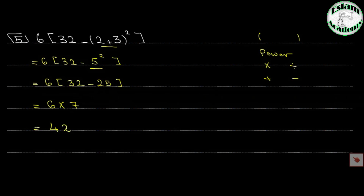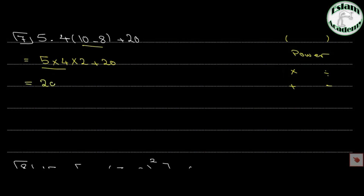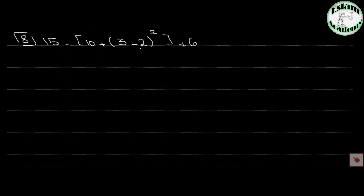Number 6: 5 times 4 times (10 minus 8) plus 2. We solve the bracket first: 10 minus 8 equals 2. So it becomes 5 times 4 times 2 plus 20. We have two multiplications and one addition, so solve multiplications first from left to right. 20 times 2 equals 40, plus 20 equals 60.